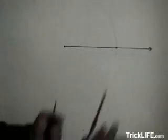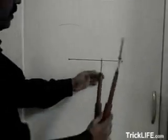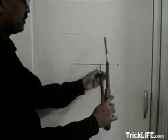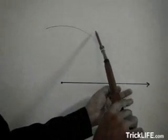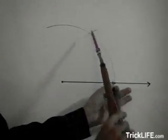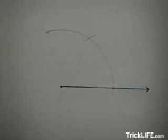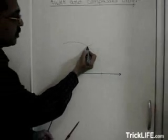Now without disturbing the radius which we have taken previously, keeping at this intersection point we intersect the previously drawn arc like this. So we got another intersection point here.